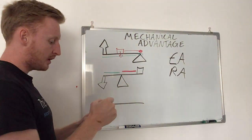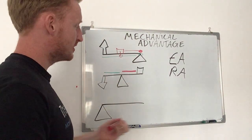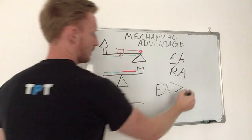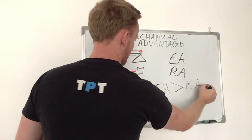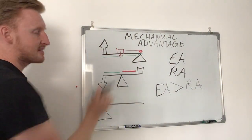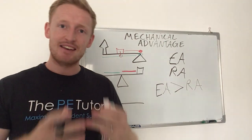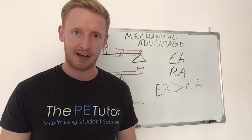Now, what we're looking for for a mechanical advantage is for the effort arm to be greater than the resistance arm. So if the green line is greater than the red line, then we can say that that lever system is in a mechanical, or has a mechanical advantage.